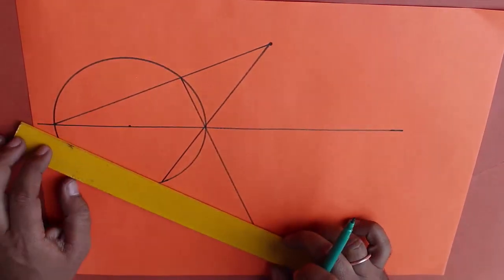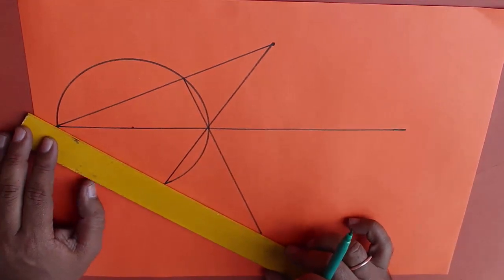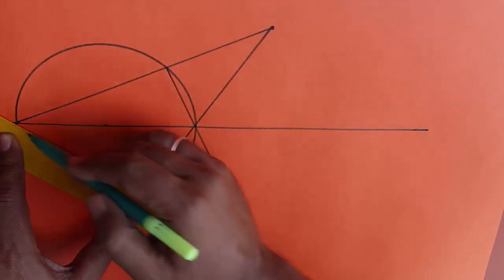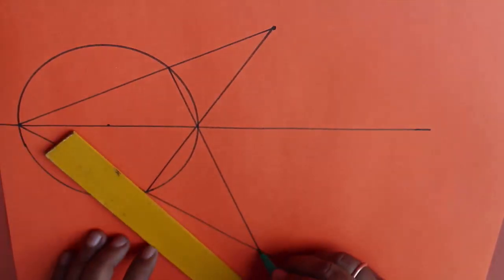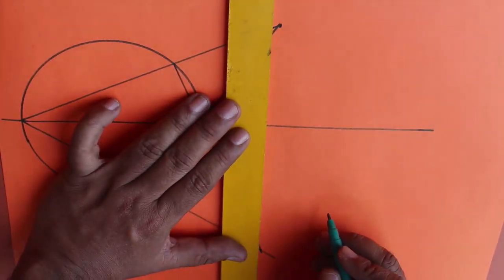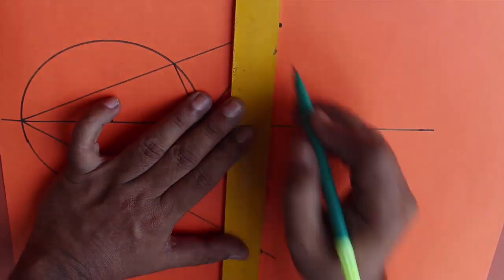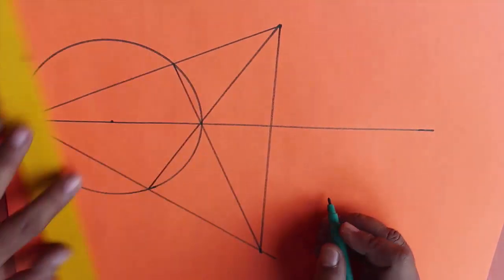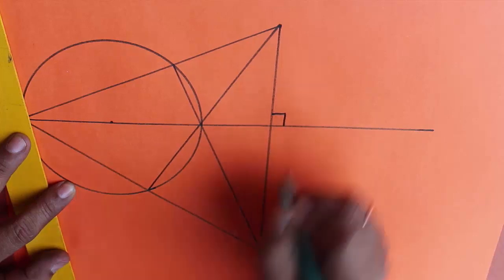What this means is that both these triangles are right angle triangles, and this is the basis of the activity. Now if we join these two points, we make a larger triangle, and this line is perpendicular to the original line. Let's see how.